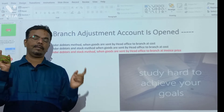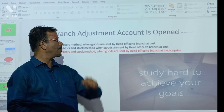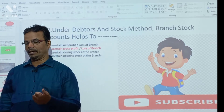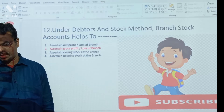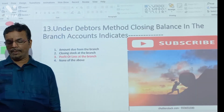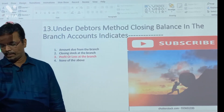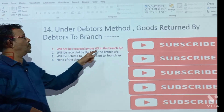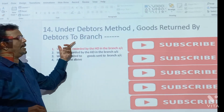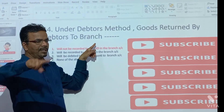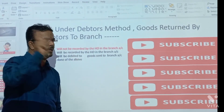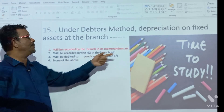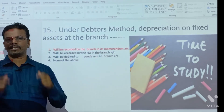Branch adjustment account is opened under the debtors and stock system when goods are sent by HO to the branch at invoice price — invoice price means selling price. Under the debtors and stock method, branch stock accounts help to find out gross profit and loss. Under the debtors method, the closing balance in the branch account indicates profit and loss at the branch. Goods returned by debtors to the branch will not be recorded by HO, because these transactions are between debtors and the branch only — HO is not concerned. Depreciation on fixed assets at the branch will be recorded by the branch in a memorandum account, which means a rough account.